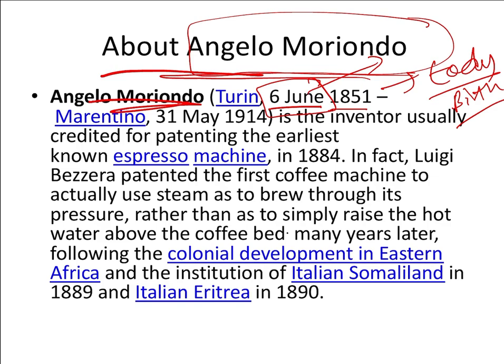He was born in Turin on 6 June 1851 and died on 31st May 1914. He is the inventor who patented the espresso machine — also called the coffee machine — for the first time in 1884.